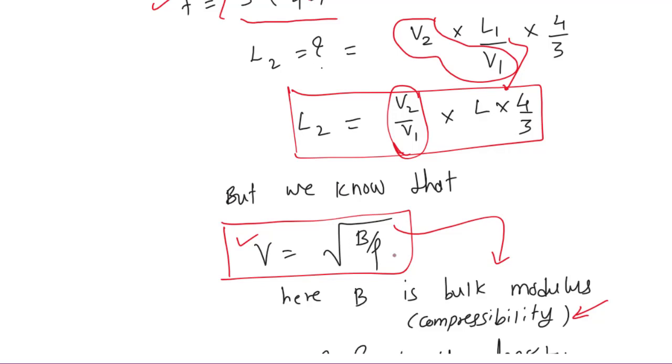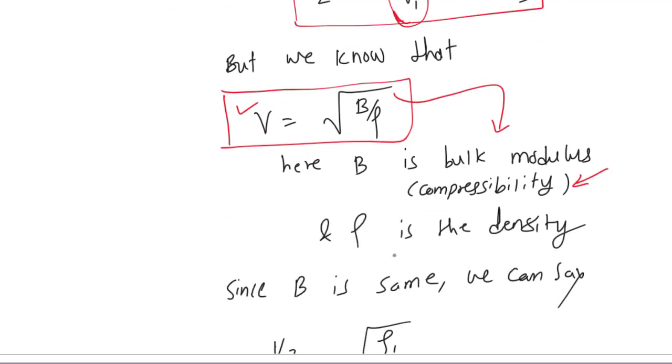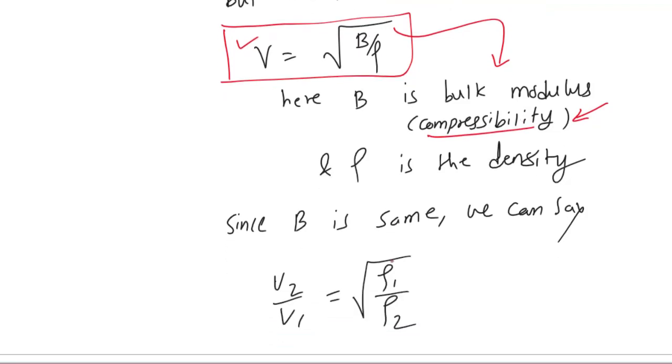So we can say B is same. When B is same, we can have this formula: V₂ divided by V₁ is equal to square root of ρ₁ divided by ρ₂, because V is directly proportional to under root of ρ. That is why V₂ divided by V₁ equals under root of ρ₁ divided by ρ₂.